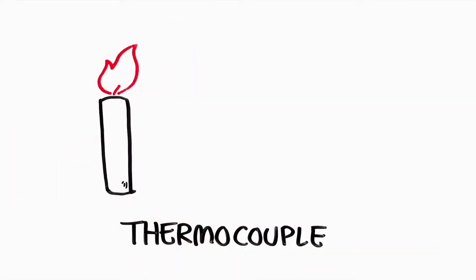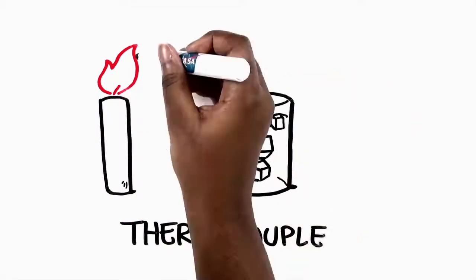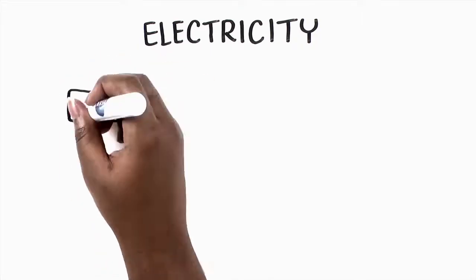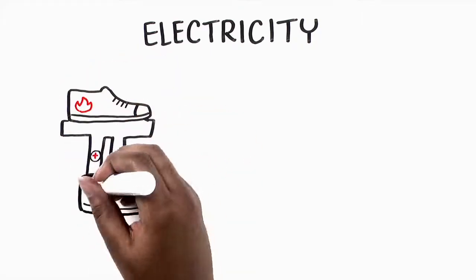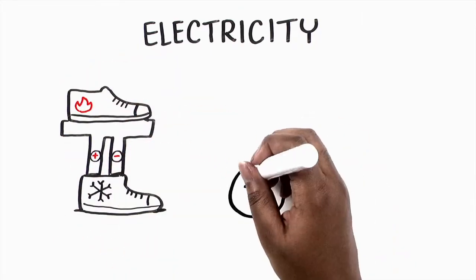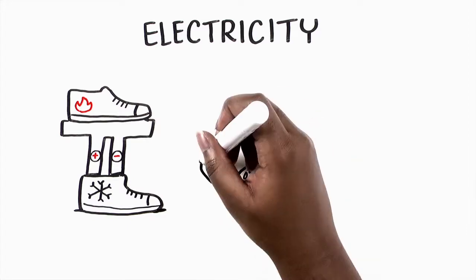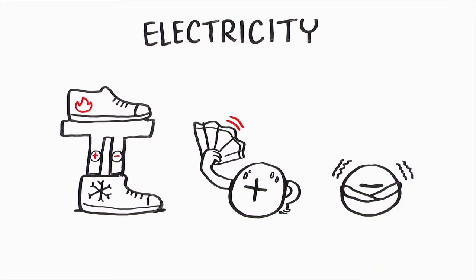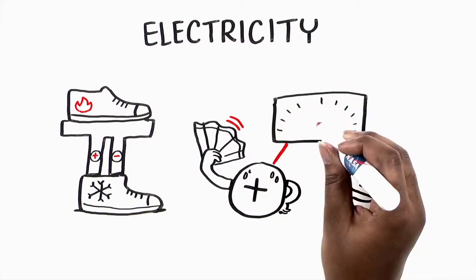Engineers use this material in devices called thermocouples which are used to generate electricity. One of the thermocouple's shoes is hot and one is cold. This heat, transferred across a big temperature difference, makes electrical charges flow from the hot shoe to the cold shoe and produces an electrical voltage, and this generates useful electrical power.